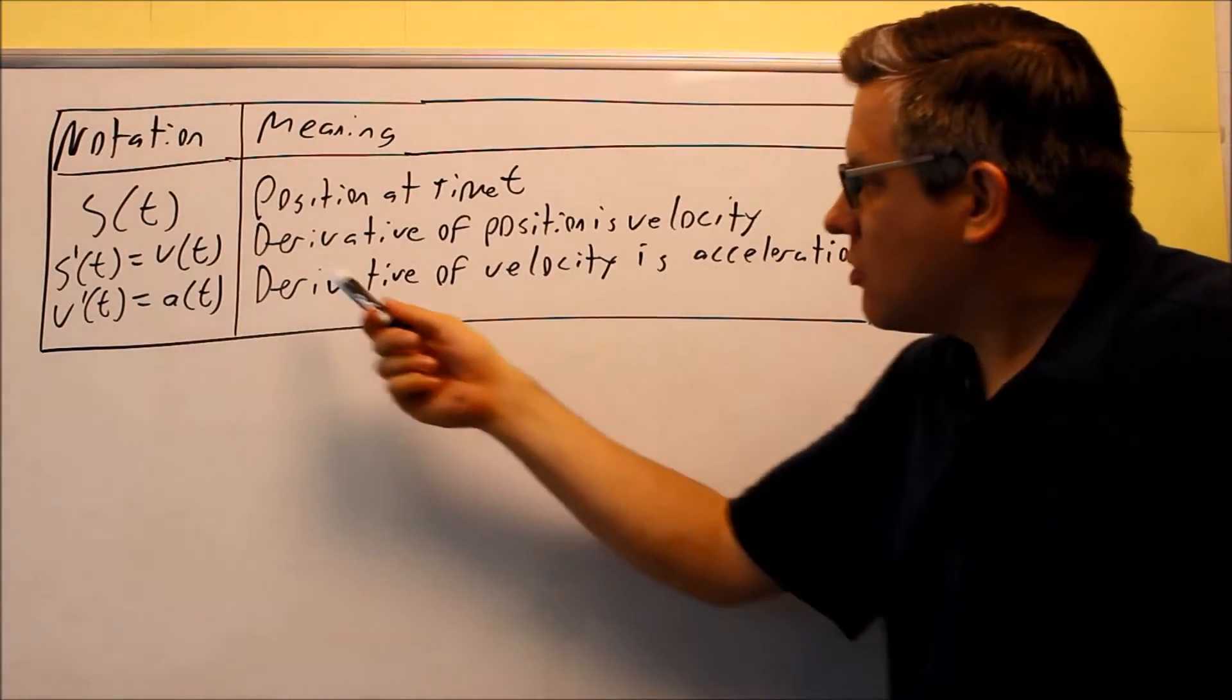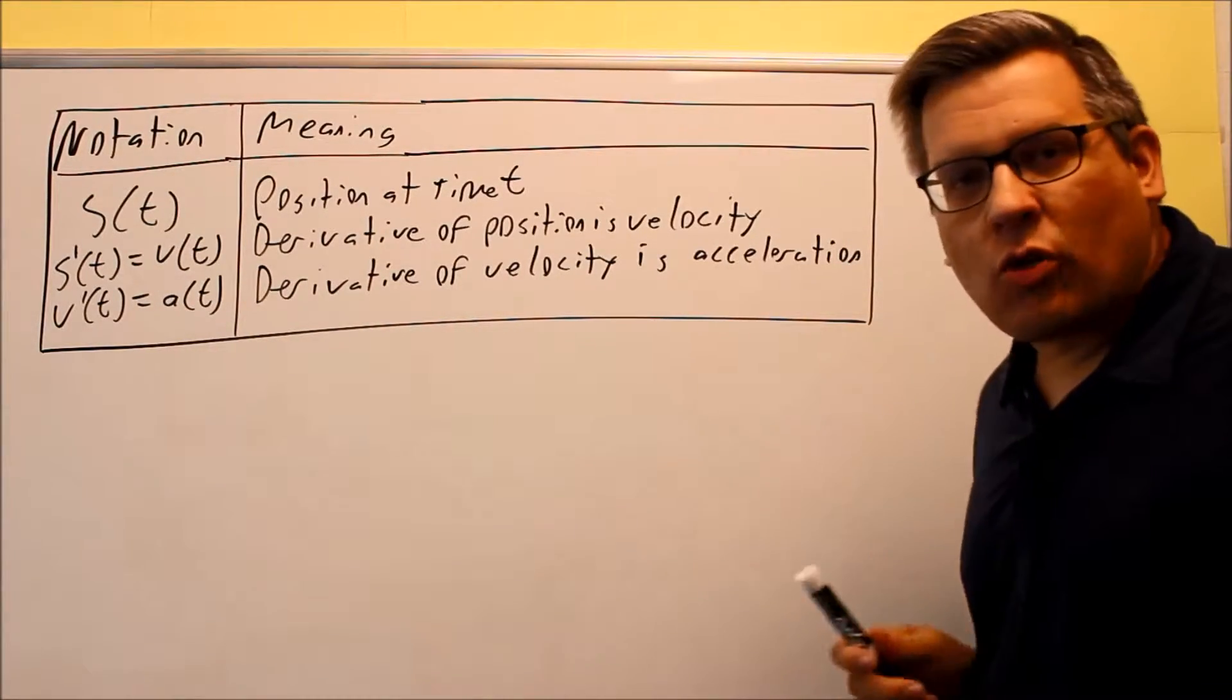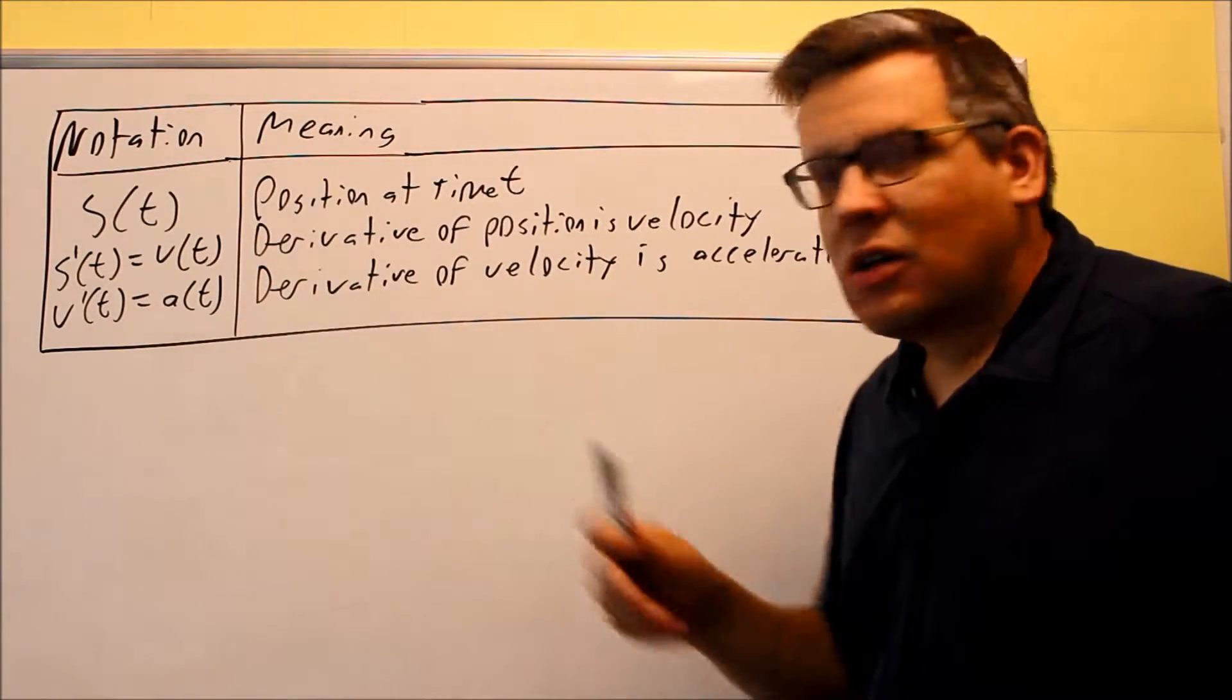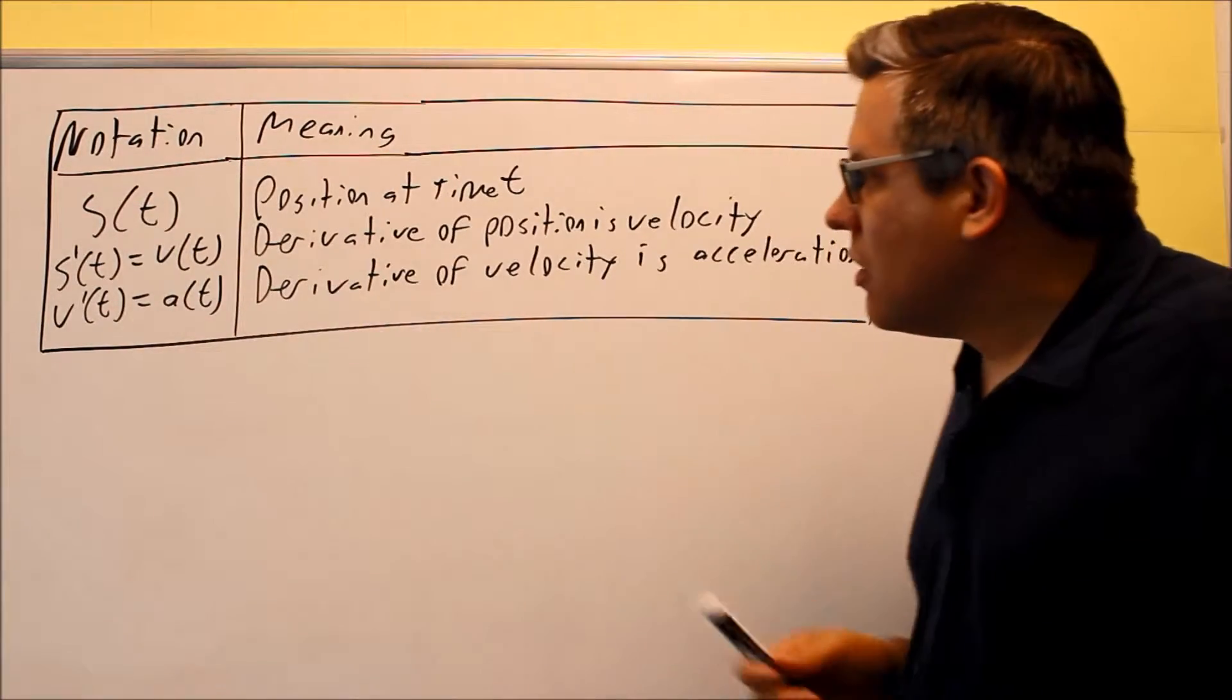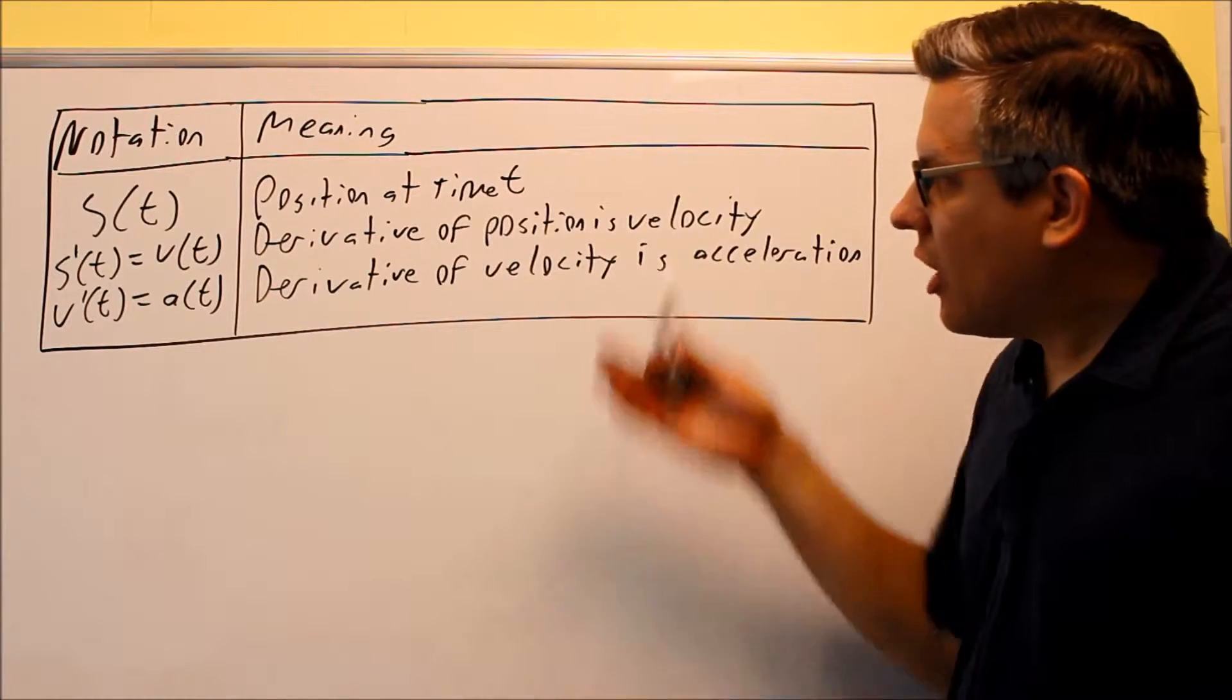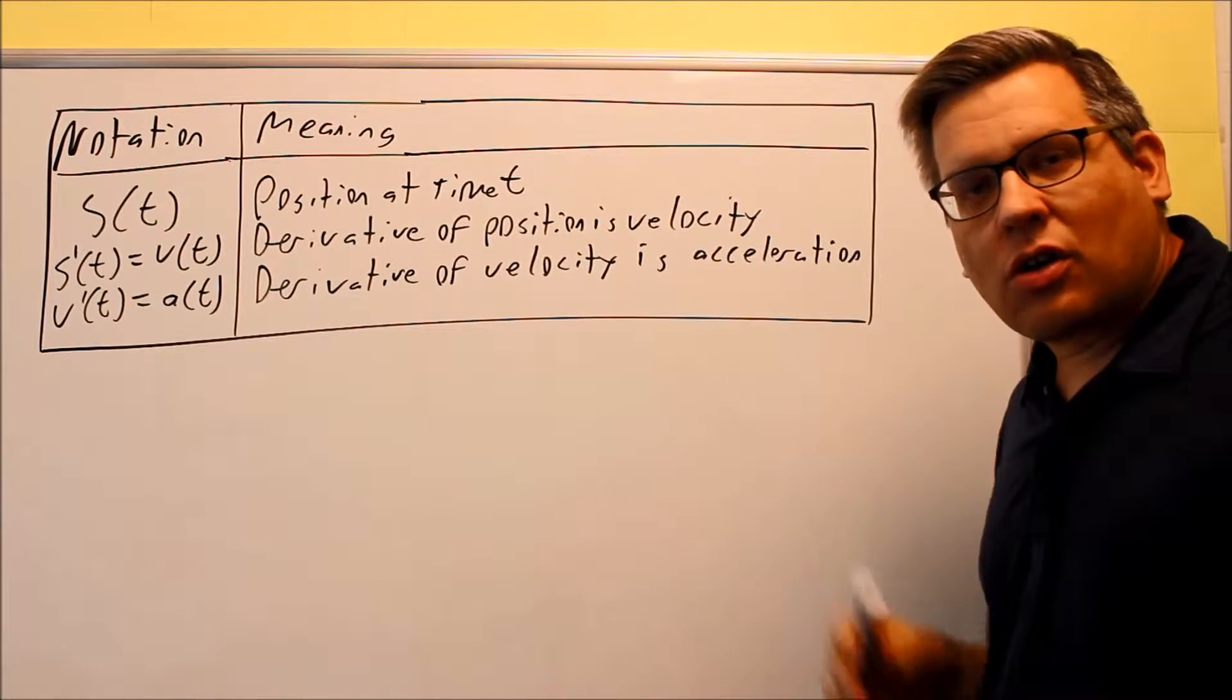Then we have this derivative of velocity is acceleration. So same thing, if we had a graph of the velocity and we found the slope of that, we would get the acceleration. So now that we've taken a look at these, let's look at a couple examples.